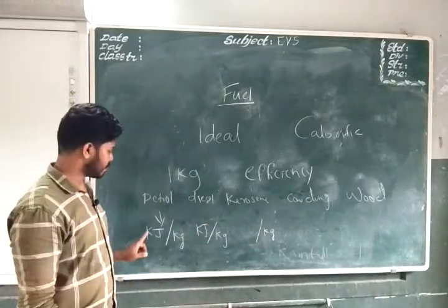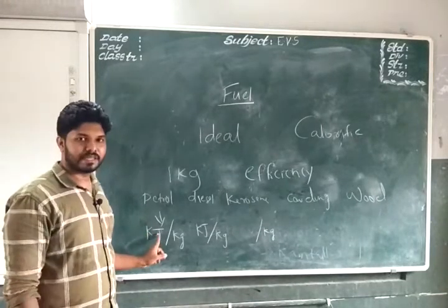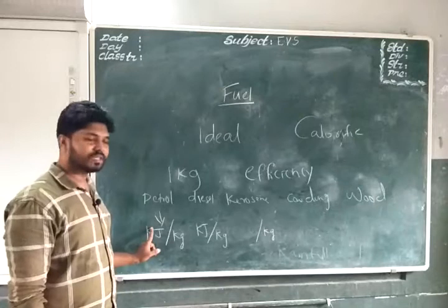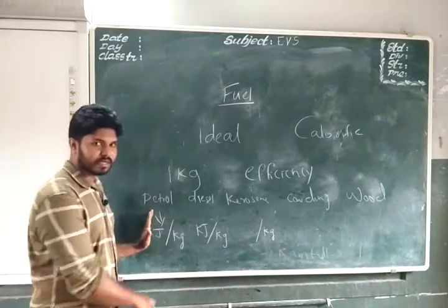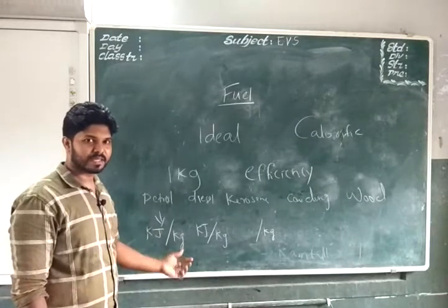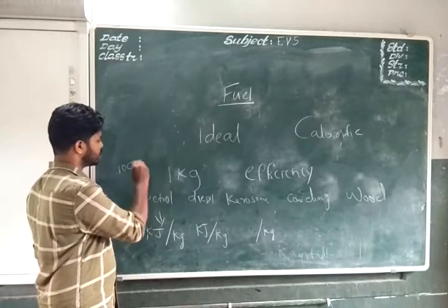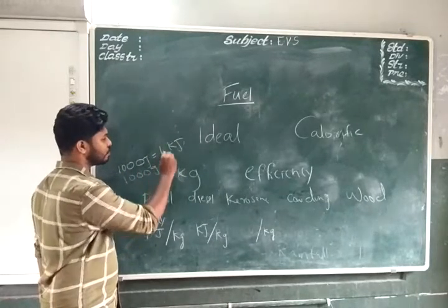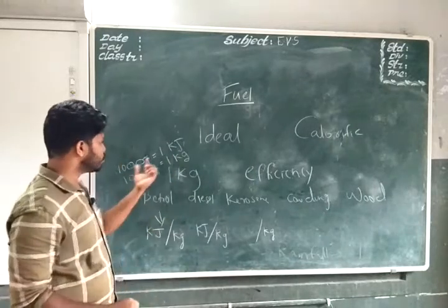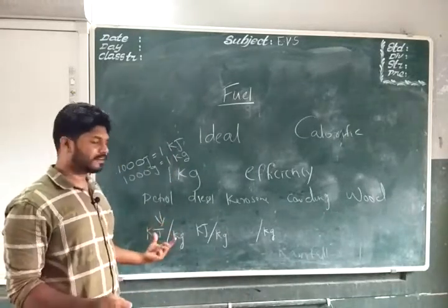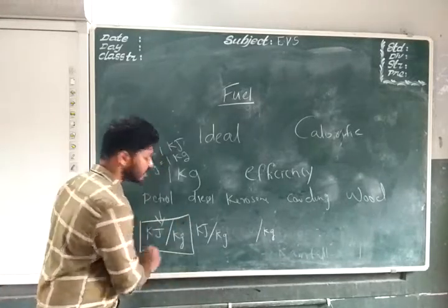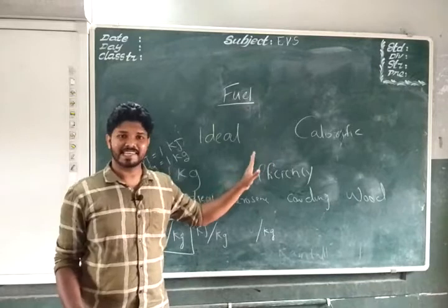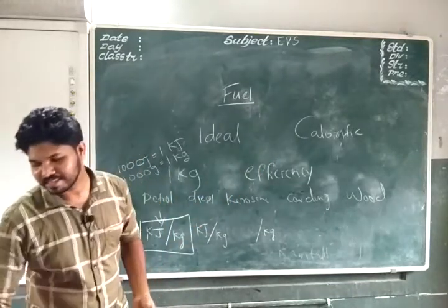Heat energy is measured per kilogram of fuel. The unit of heat energy is joule, and the unit of weight is kilogram. Just as a thousand grams equals one kilogram, a thousand joules equals one kilojoule. So calorific value is represented in the unit kilojoule per kilogram. By checking the calorific value we decide whether a fuel is efficient or not.